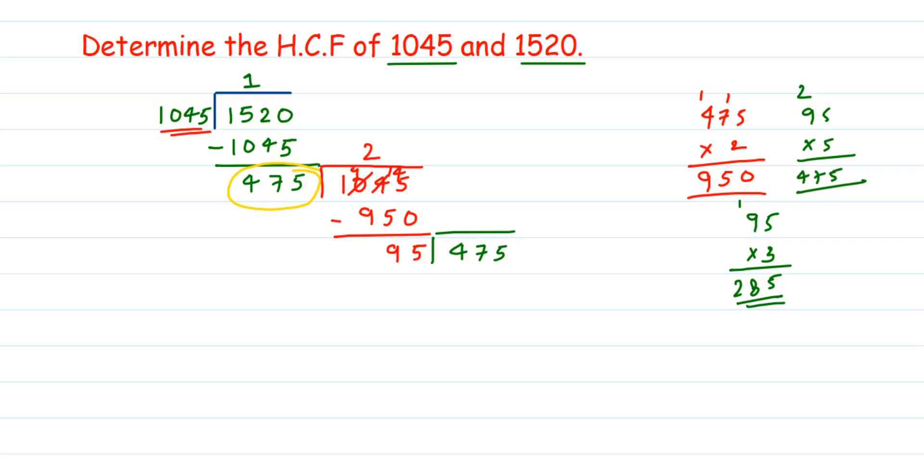So, 95 times 5 is 475. Subtract this. We get 0. So, this is completely divisible. We got 0. Once you got 0, stop there. Now, what will be your HCF then? The divisor. The last step. That is where you got 0 as a remainder. For that step, what was your divisor? In this case, it is 95. So, 95 is the HCF. So, HCF of 1045 and 1520 equals 95.